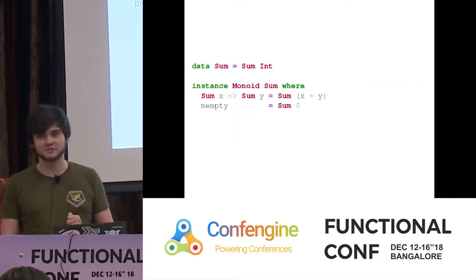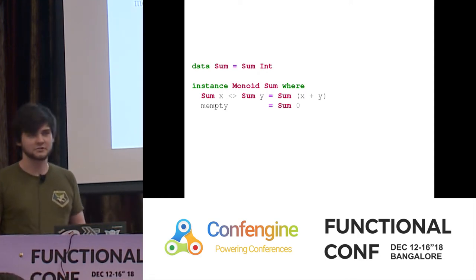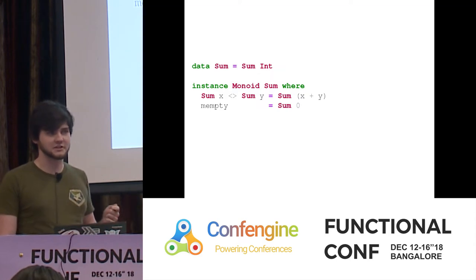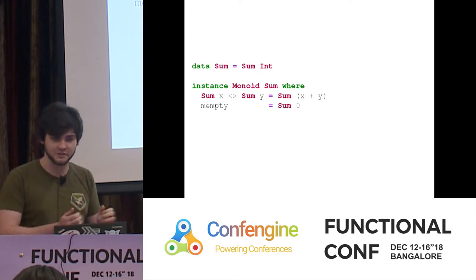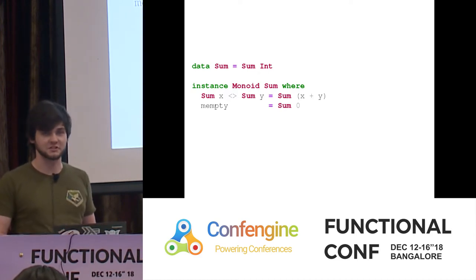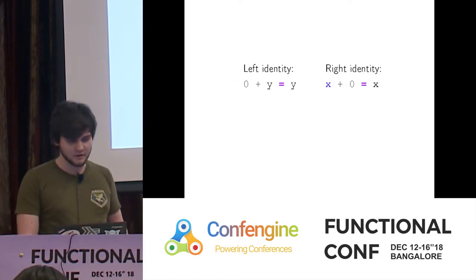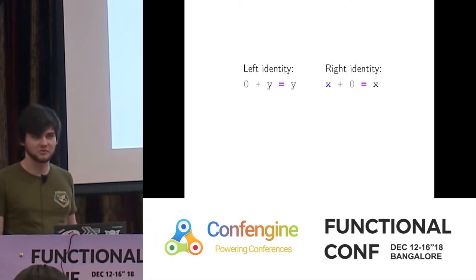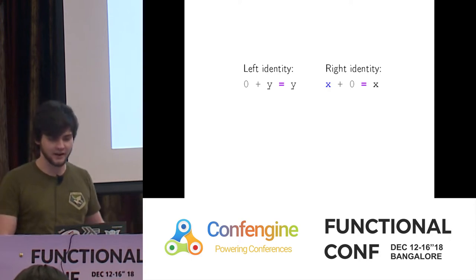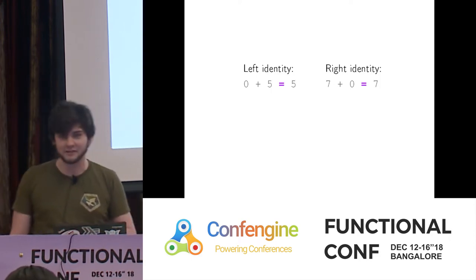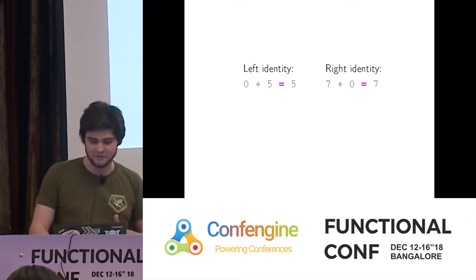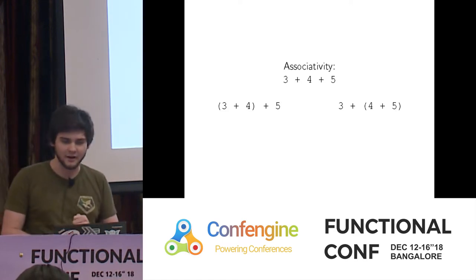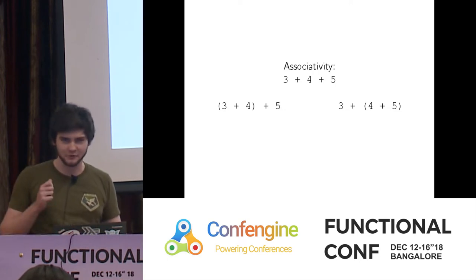Addition is a great example of a Monoid. We can make a data type Sum wrapping an integer. The Monoid instance says combine two integers with addition, and the empty integer with respect to addition is zero. In terms of addition, the Left Identity Law says zero plus Y equals Y, and the Right Identity Law says X plus zero equals X. Associativity says we can parenthesize differently and still get the same result — adding three, four, and five is twelve either way.